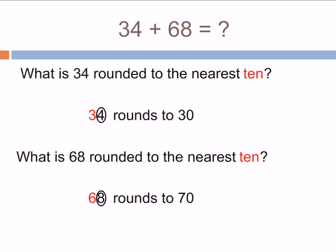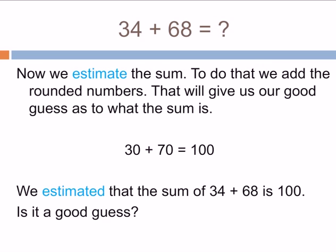So 34 is closest to 30, and 68 is closest to 70. Now we estimate the sum. To do that, we add the rounded numbers. That will give us our good guess as to what the sum is.